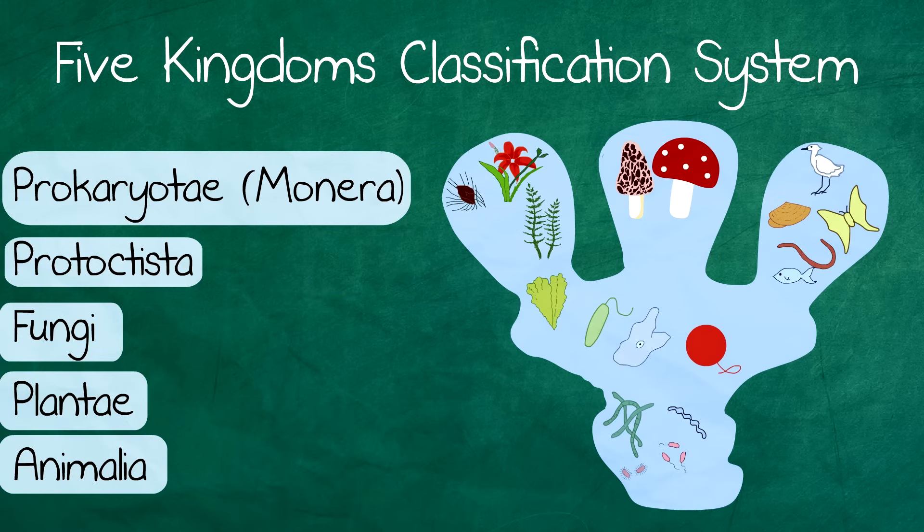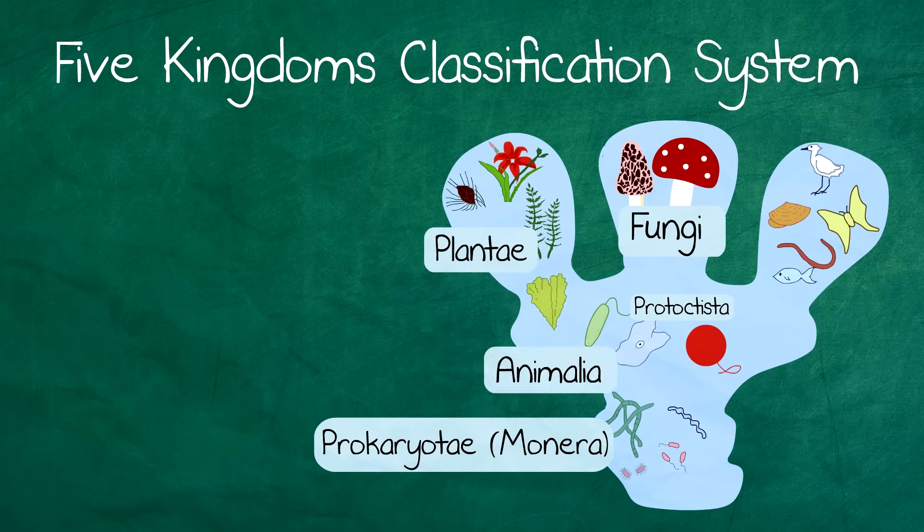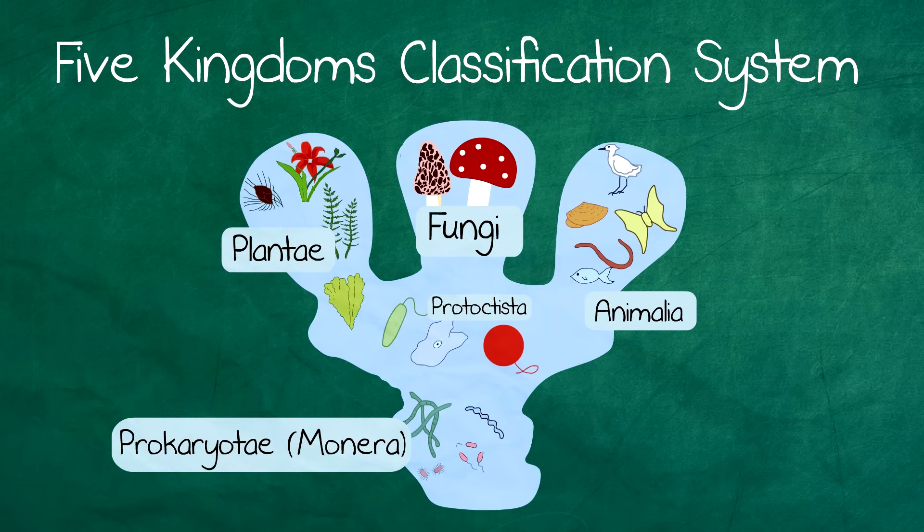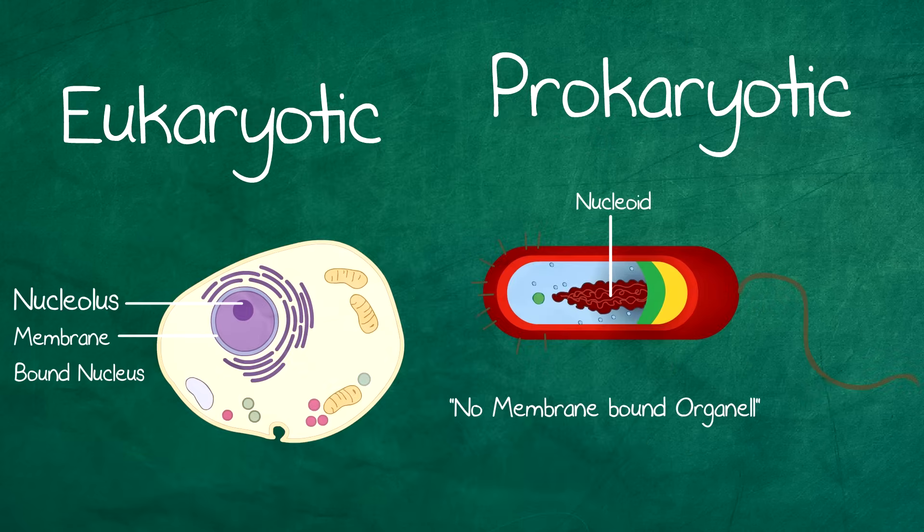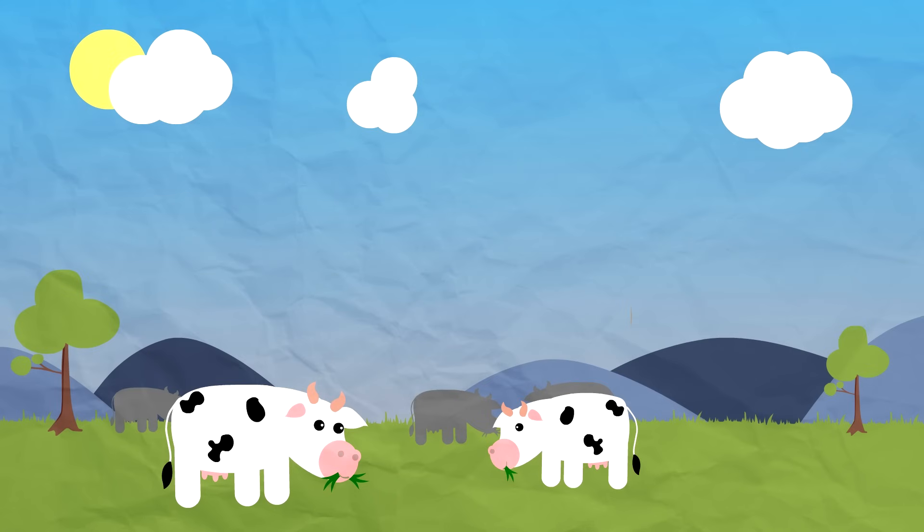Each kingdom has characteristic features so that an organism can easily be assigned to one of the kingdoms. These characteristics are based on cell walls, whether they are eukaryotic or prokaryotic, and on the way they get nutrition.